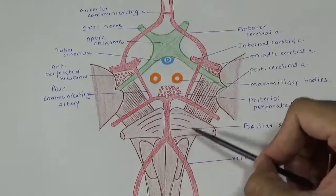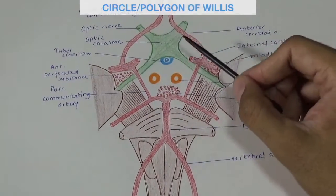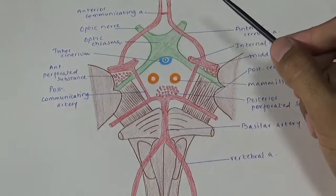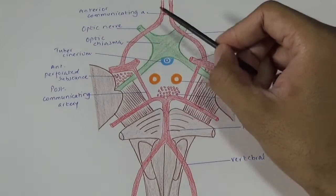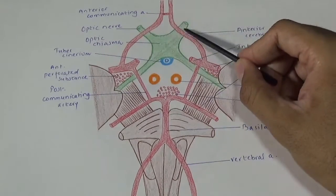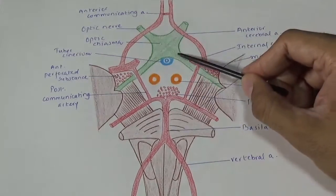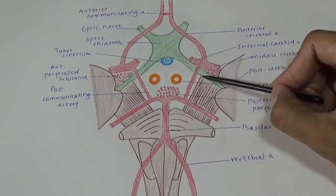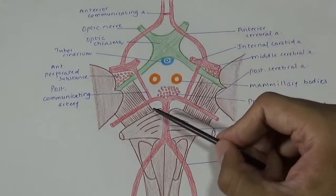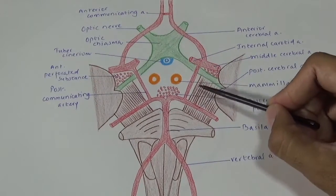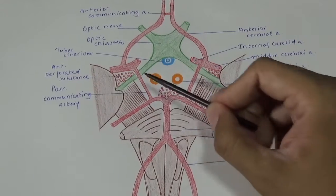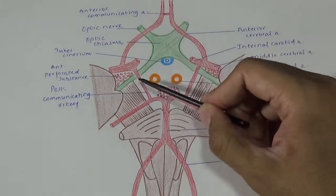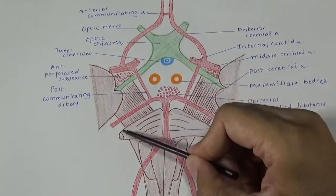This is the interpeduncular fossa plus a portion of the circle of Willis. This is the optic chiasma, which is a quadrilateral plate — it provides attachment to the optic nerves anterolaterally and the optic tract posterolaterally. These two are the optic tracts. This is the brainstem: midbrain, pons, and medulla. These two are the basis pedunculi.